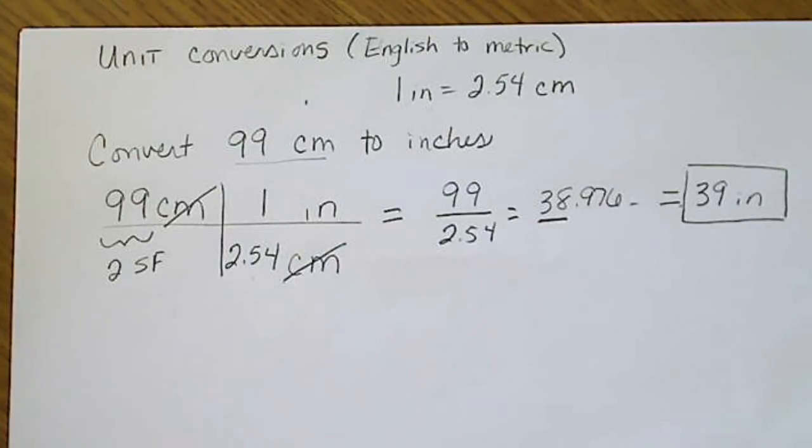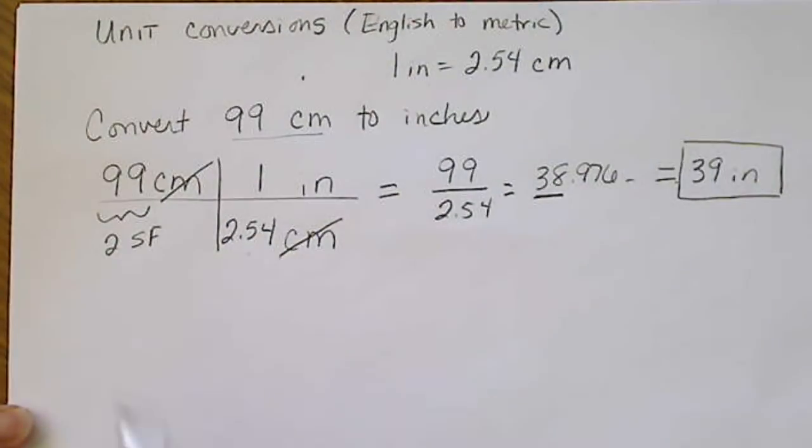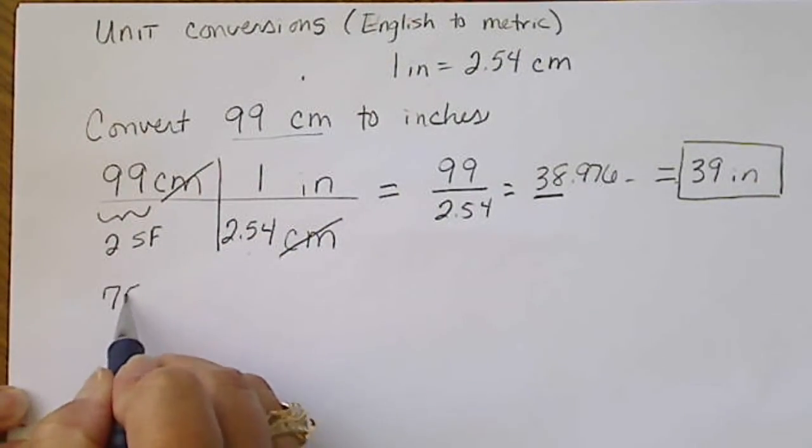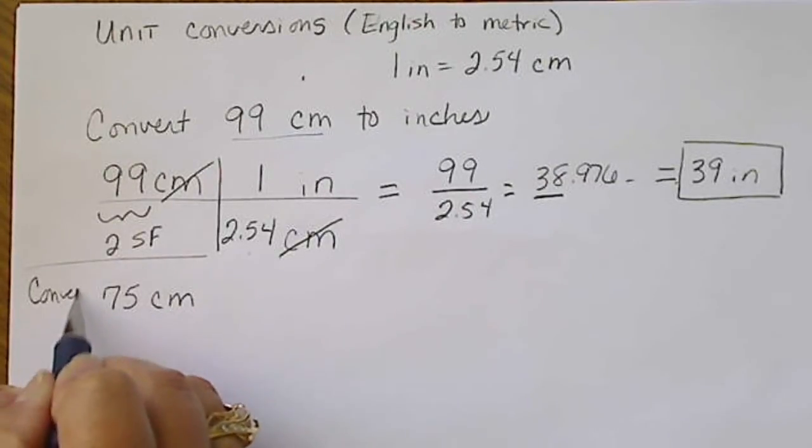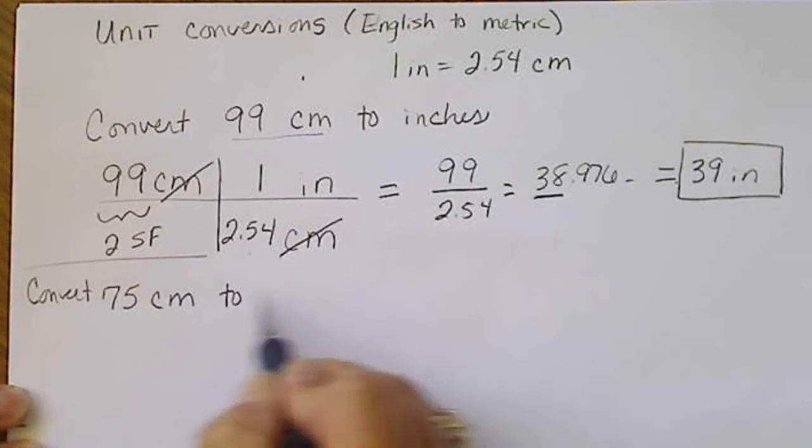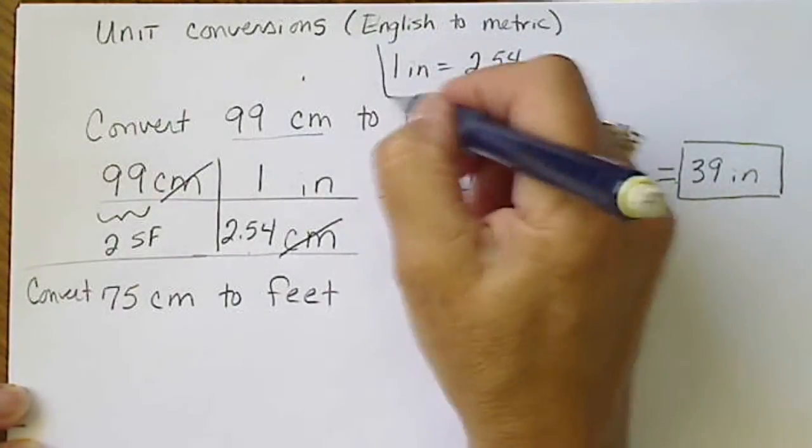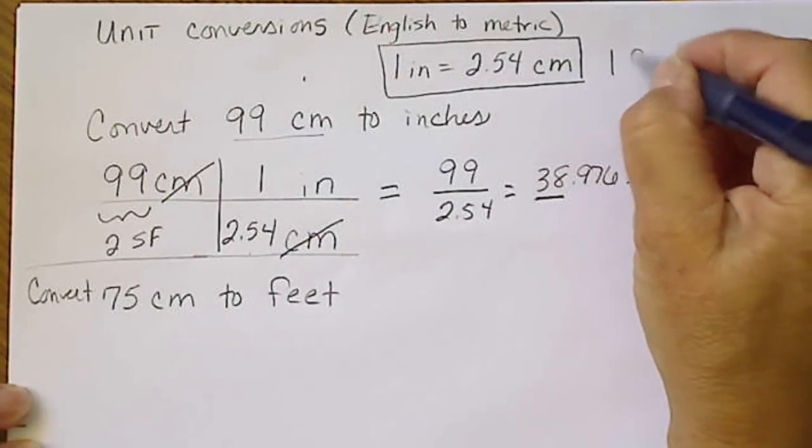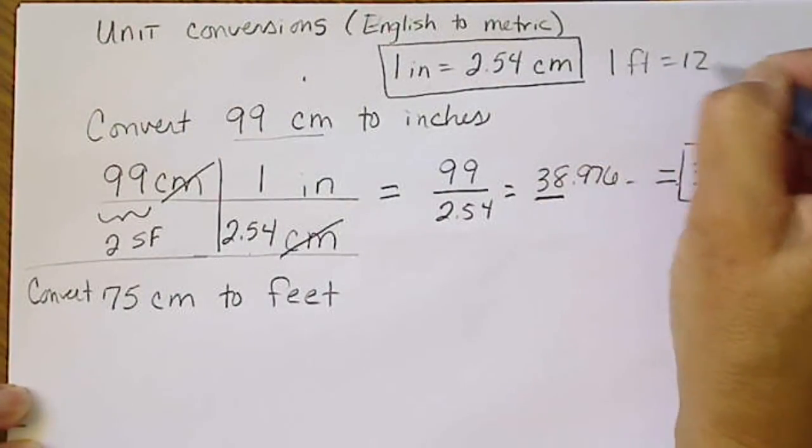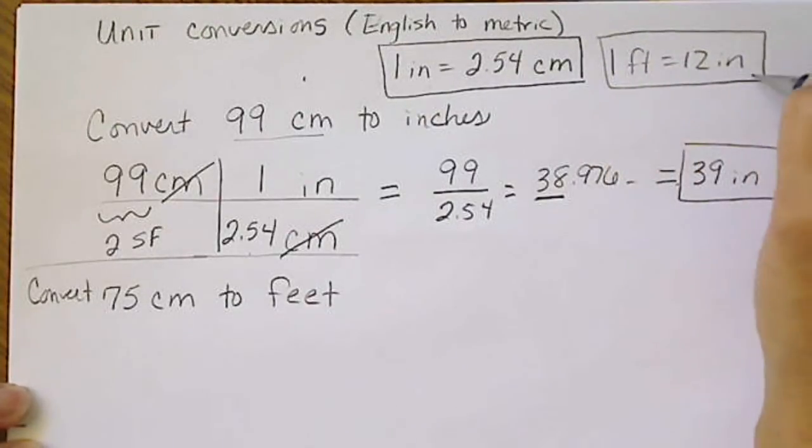Sometimes we'll have several unit conversions that we have to go through in order to get to the correct answer. So let's choose another problem. If we say 75 centimeters, we'll convert centimeters to feet. Again, I'm going to use this unit conversion.